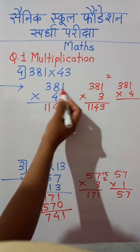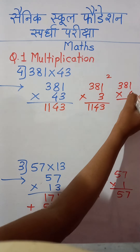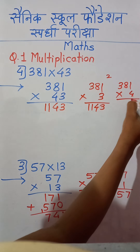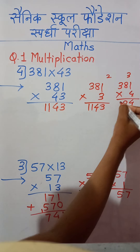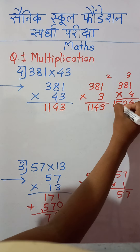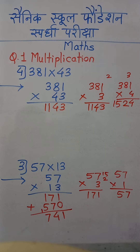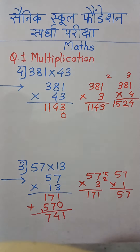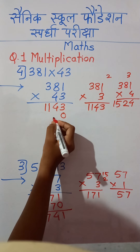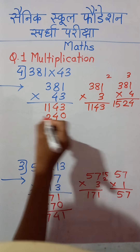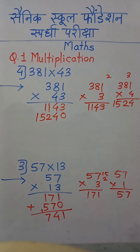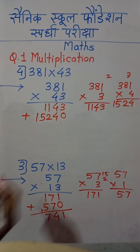We now multiply 381 by tens place digit 4: 4 ones are 4; 4 eights are 32, write 2 carry 3; 4 threes are 12 plus carry 3 is 15. So we get 1524. We do not write this directly — we write 0 at units place first because 4 is from tens place digit. So we write 15240, placing 4, 2, 5, 1 in order.